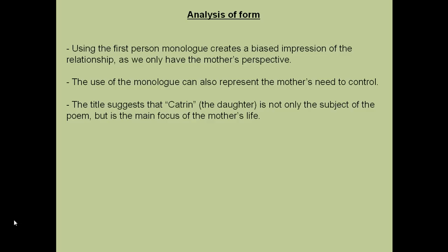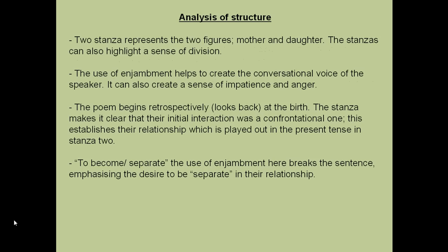The fact that the title is also 'Catrin' — known as the daughter — suggests that it's not just the subject of the poem, but perhaps Catrin is the main focus of the mother's life. In terms of structure, the two stanzas represent the two figures: the mother and the daughter. The split can also highlight the split between the two of them. The use of enjambment throughout this poem helps to create the conversational voice, but it can also create a sense of impatience and anger, as the meter is sped up.